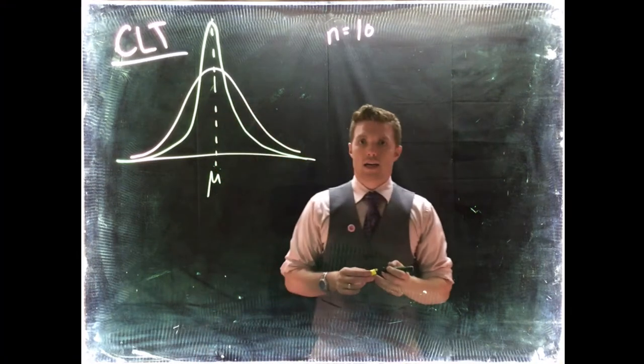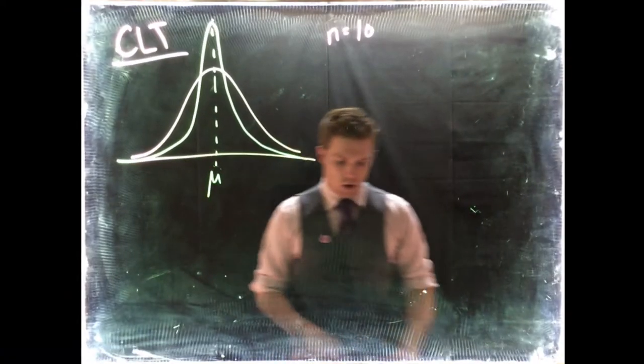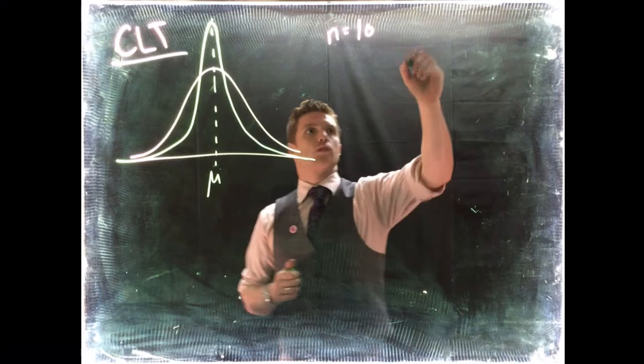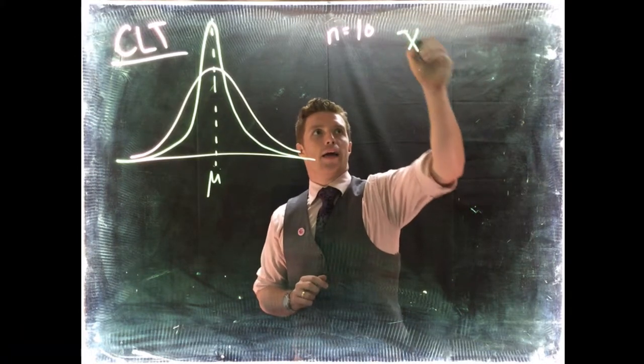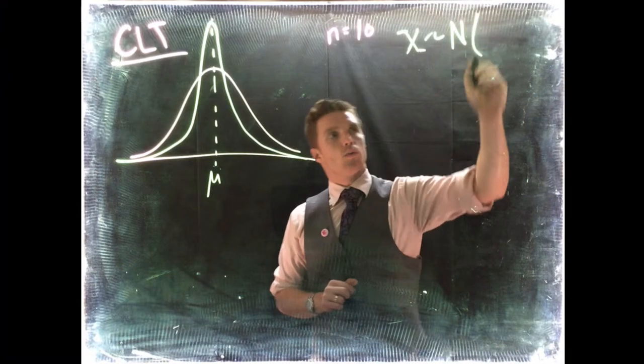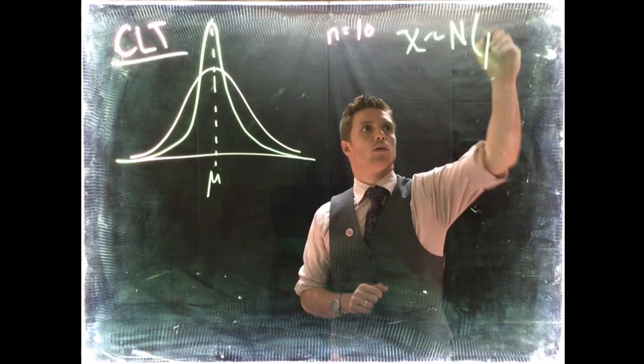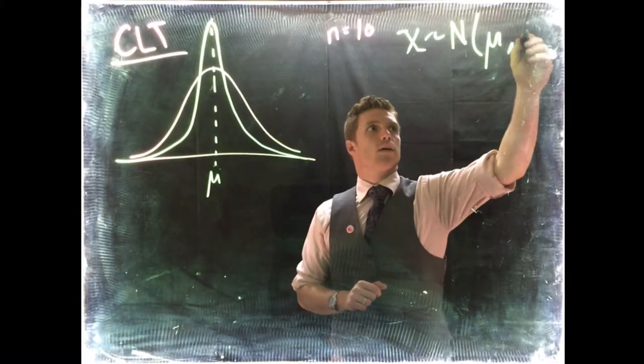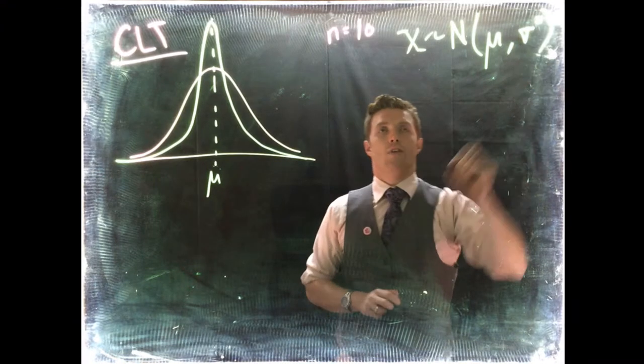Now the mean of the population and of the sample distribution are the same. So let's write that out real quick. So it's going to be capital X, that's our population distribution, is going to be normal and it's going to be mu and sigma squared, or the variance.